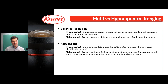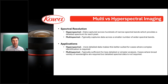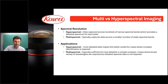In terms of applications, hyperspectral imaging provides more detailed data, making it better suited for cases where complex identification is required. Multispectral may be sufficient for less detailed or simpler analyses — cases where a broad variety of wavelengths are required but detailed spectra are not. Sometimes, as in astronomy or orbital imaging, this can be as simple as a filter wheel working on a conventional sensor with different notch filters to capture those bands.